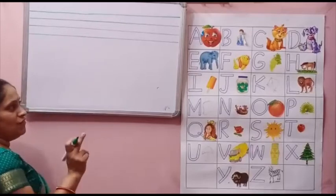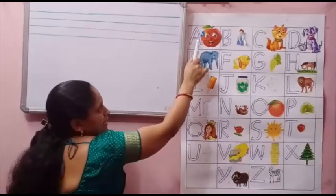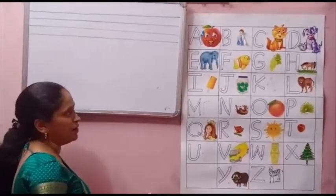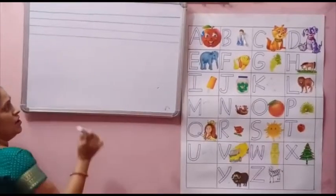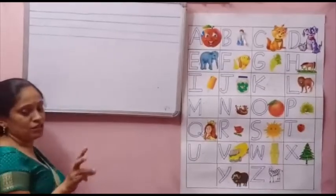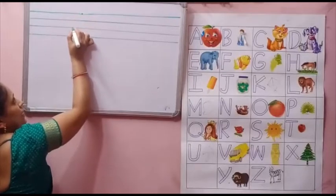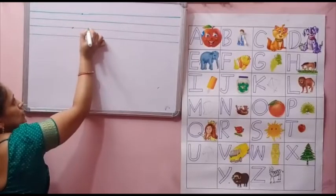Okay, now first alphabet is A. A for apple. Now start A. Now three dots. Join our book. Three dots. Look at the board. One, two, three.